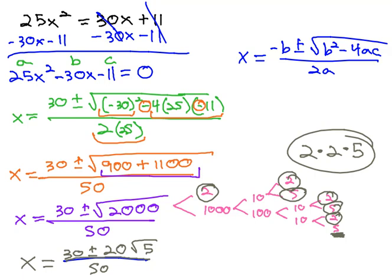But what we can do is we can identify that there is a common factor in the numerator of 10, leaving behind 3 plus or minus 2 root 5. And now we can reduce the 10 over 50, leaving a 5 behind in the denominator.